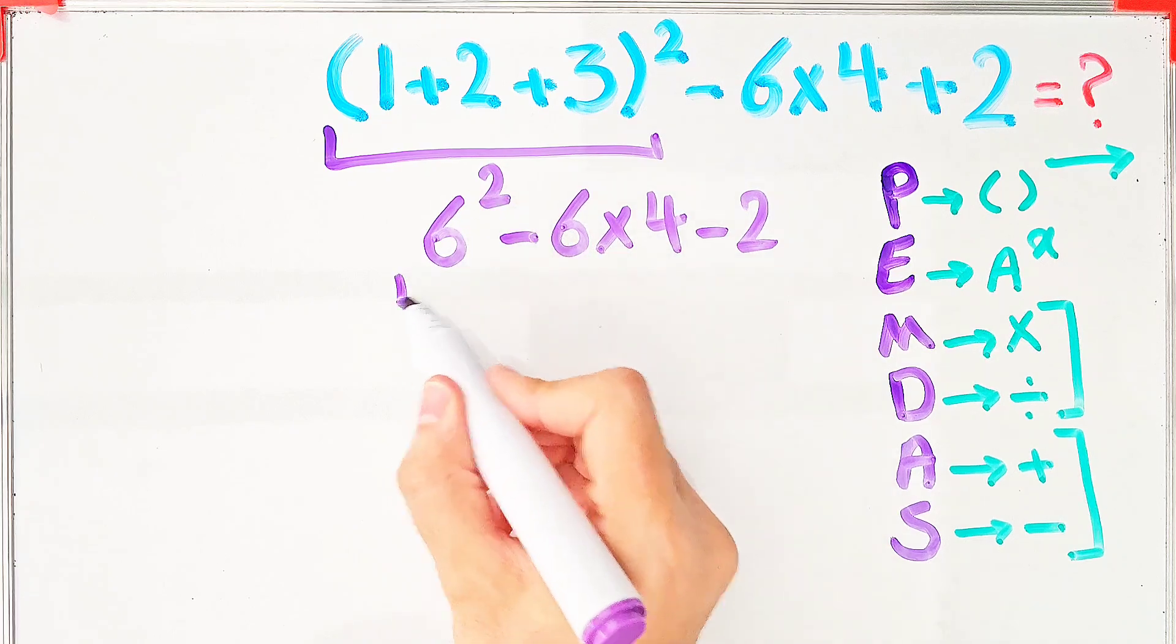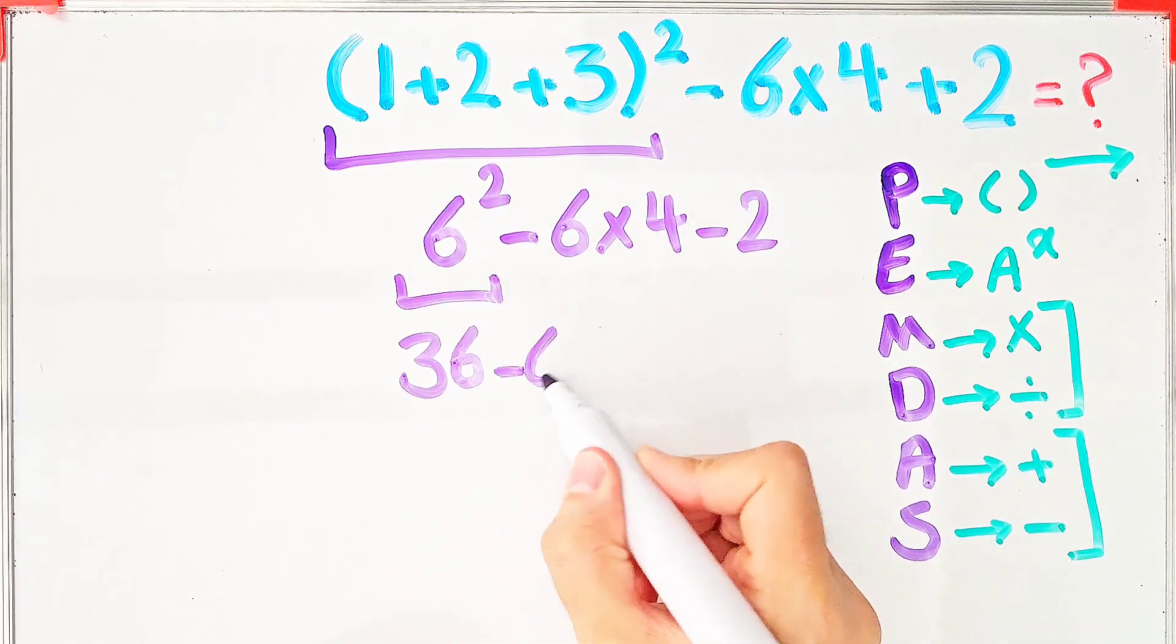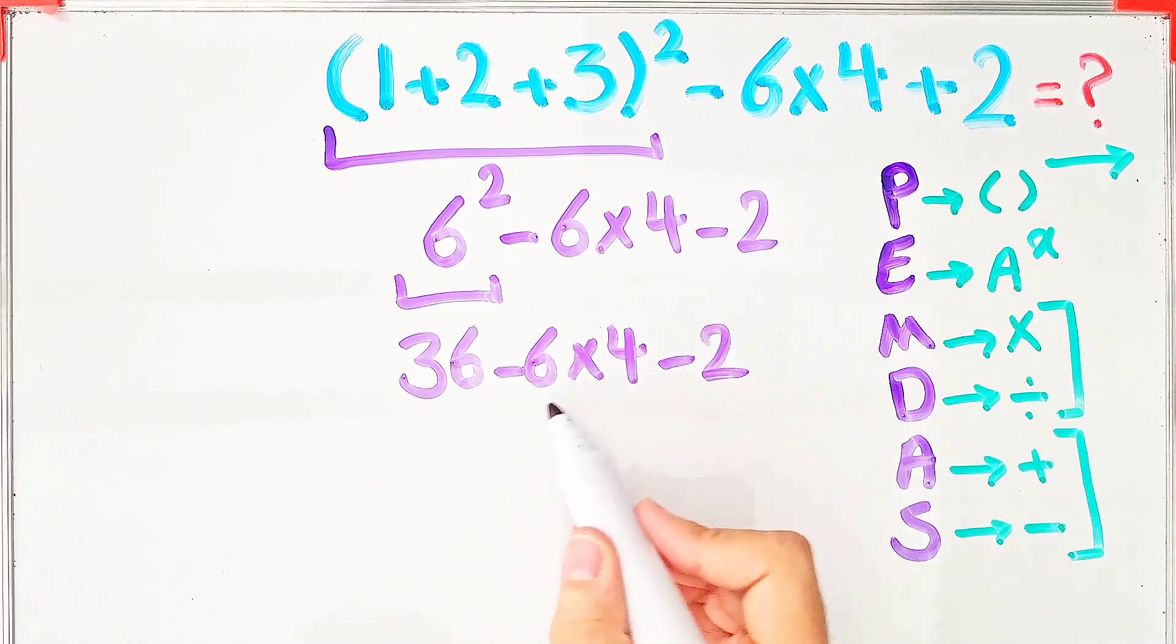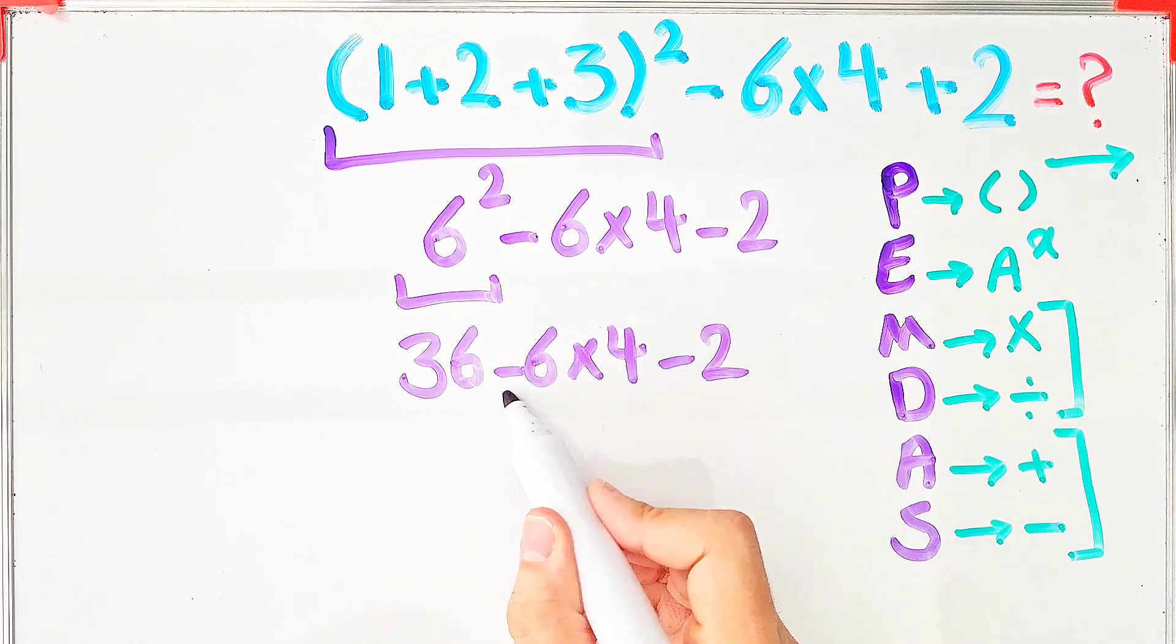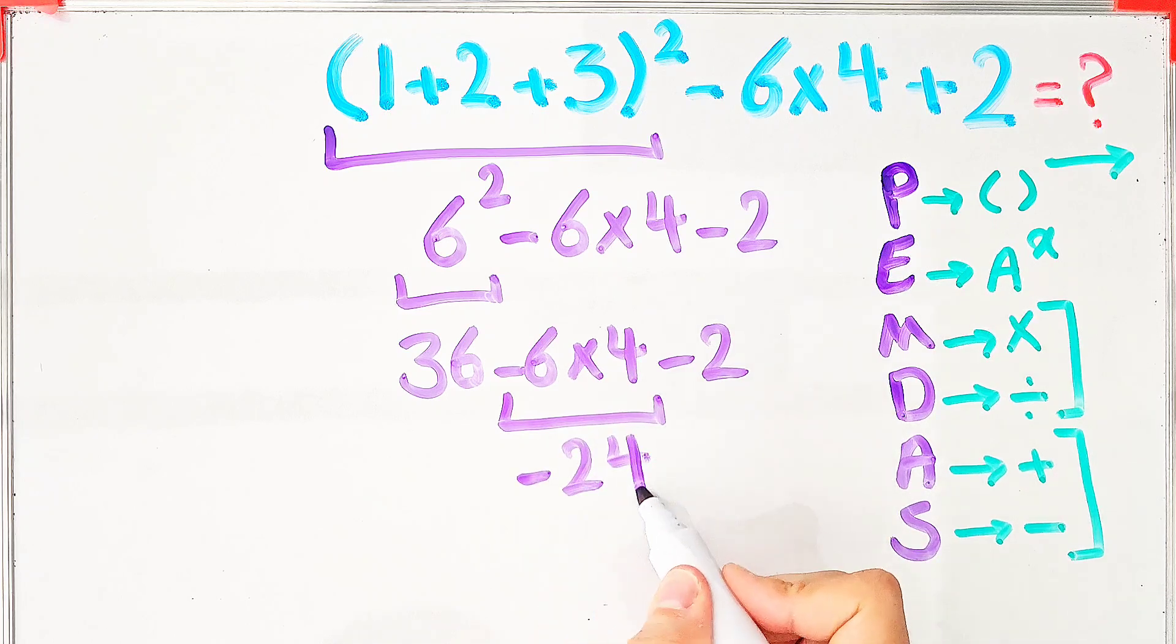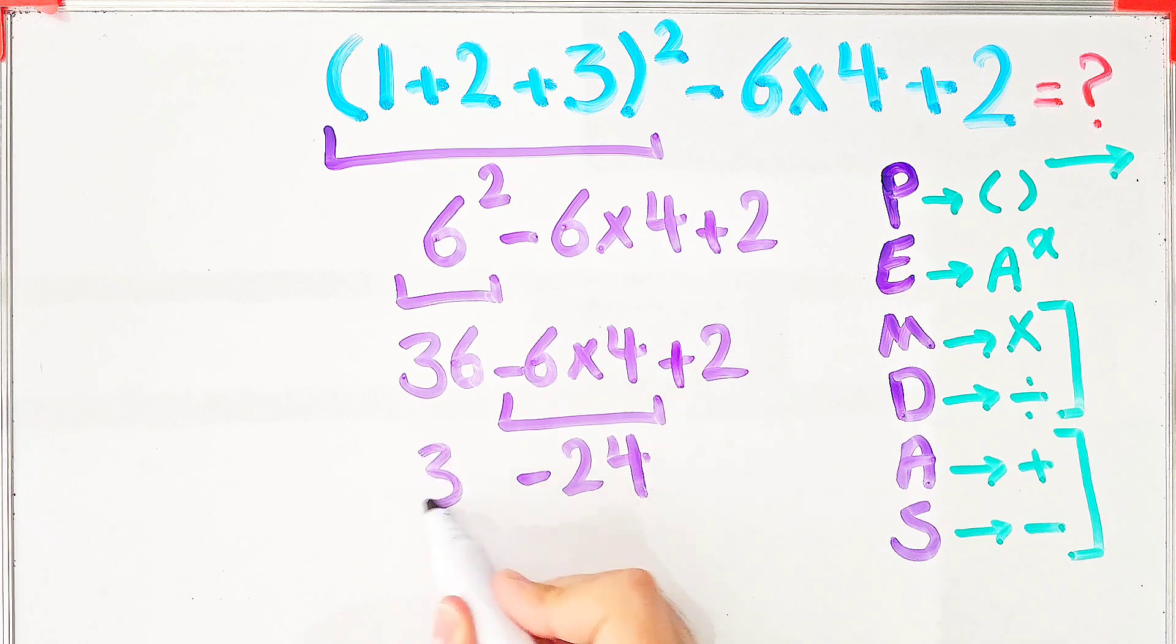Now we have subtraction, multiplication, and addition. First we do this multiplication. Now the question is 36 - 24 + 2.